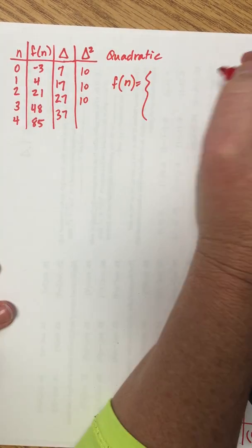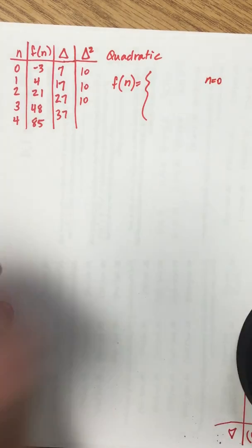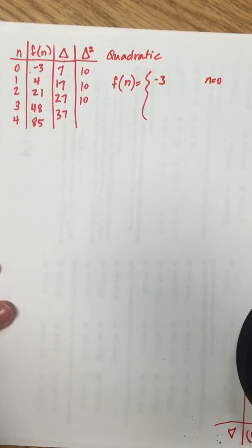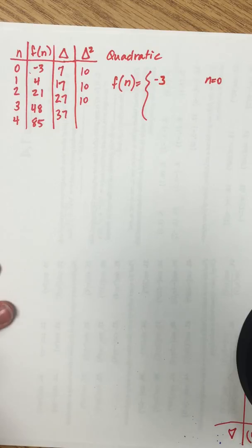Our first input is 0, so when n is equal to 0 what is the output? We put negative 3 right there. That gives us a starting place for a recursive because recursive always depends on the output that came before and this is our first output.